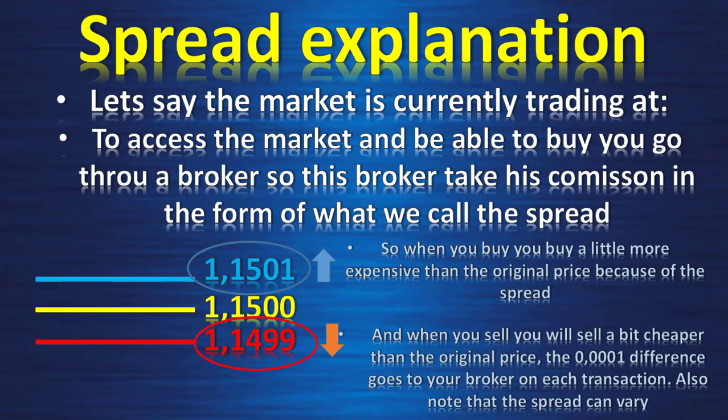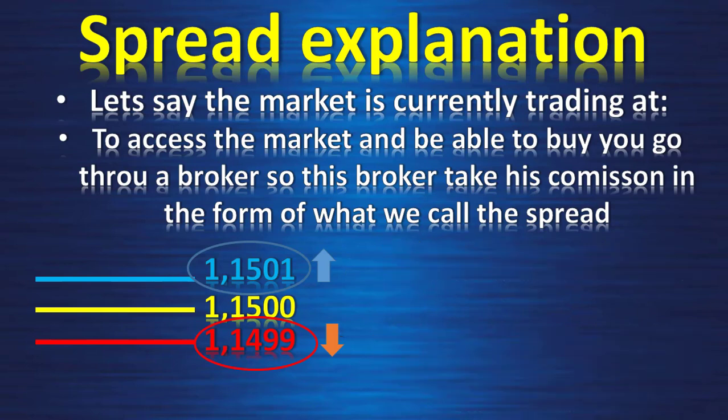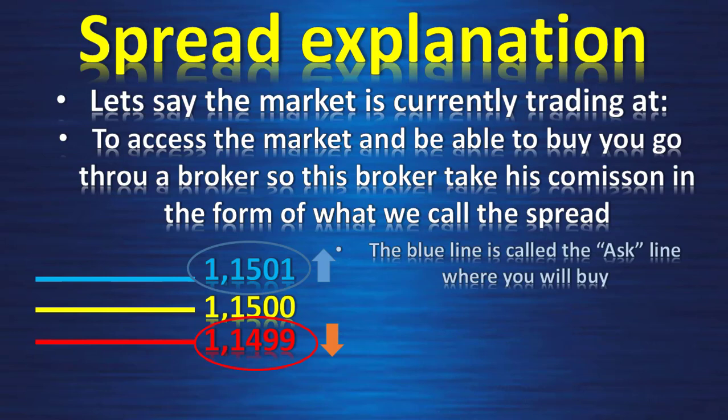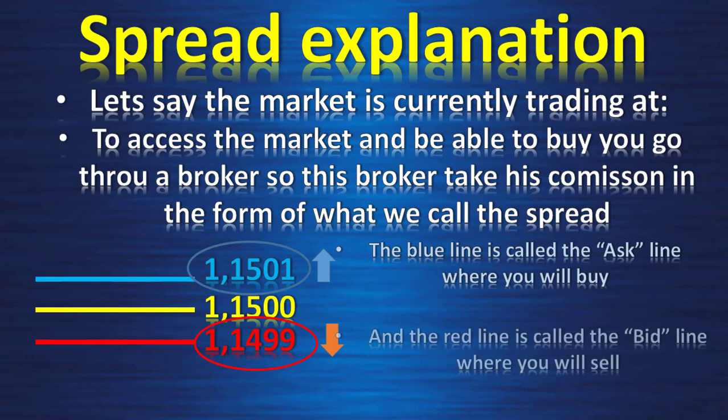When you sell, you sell a bit cheaper than the original price. That 0.001 difference goes to your broker on each transaction. Also note that the spread can vary. The blue line is called the ask line where you will buy, and the red line is called the bid line where you will sell.